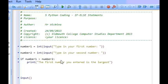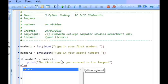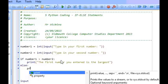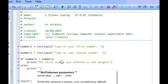So I want to display the first number you entered is the largest. But if it's not, I'm going to write down else print the second number you entered is the largest.